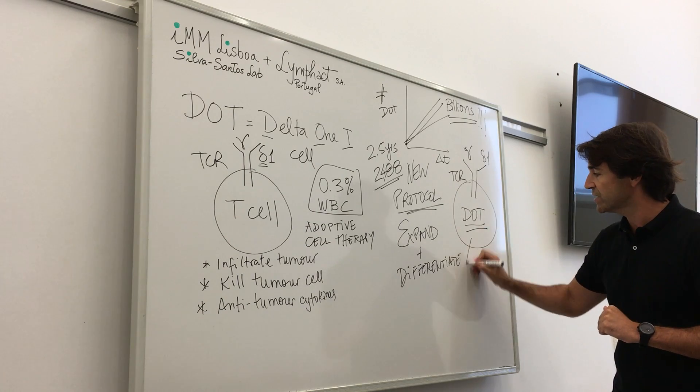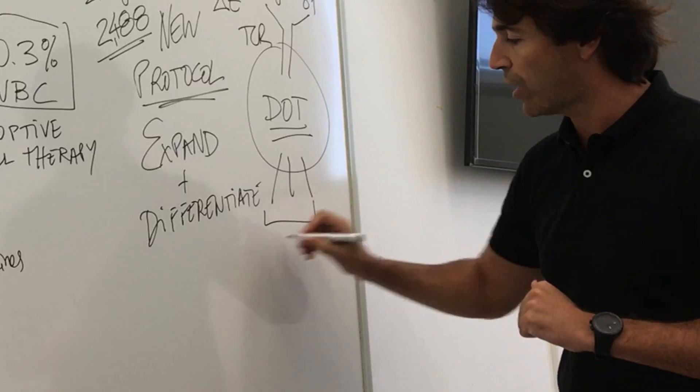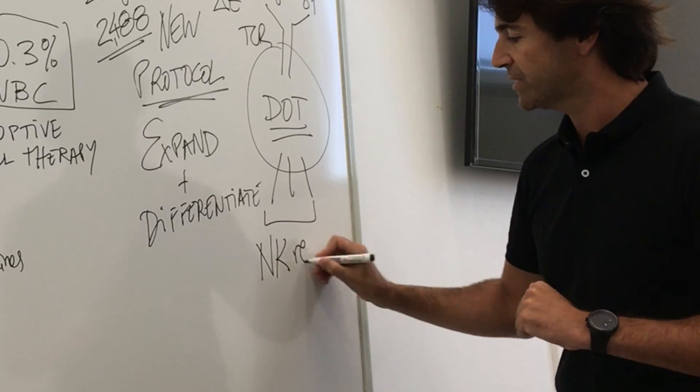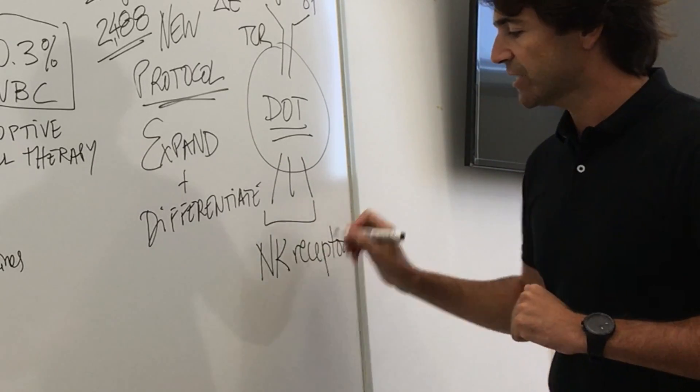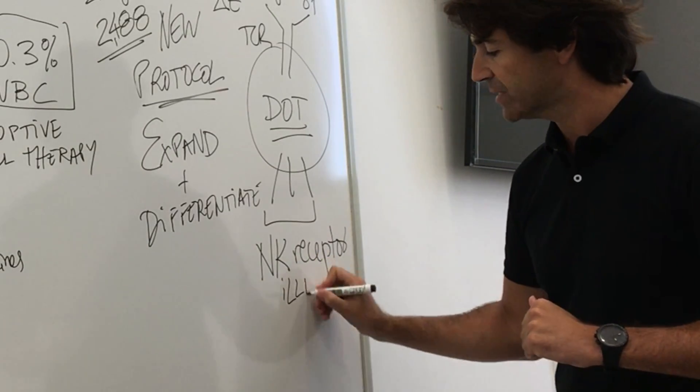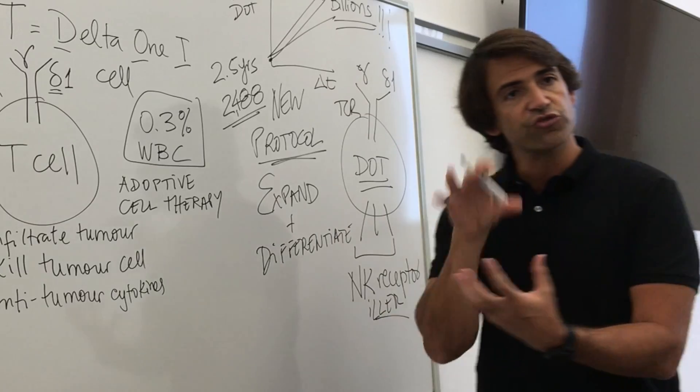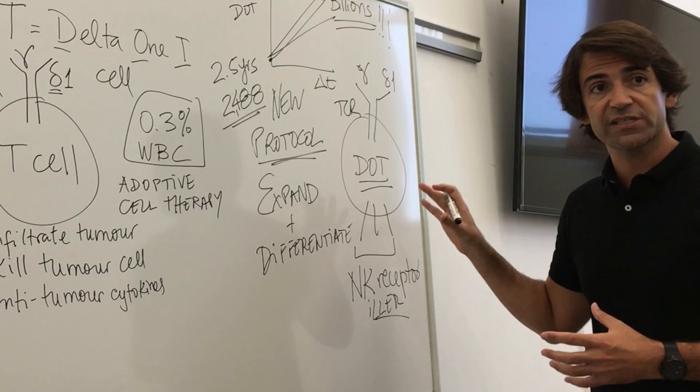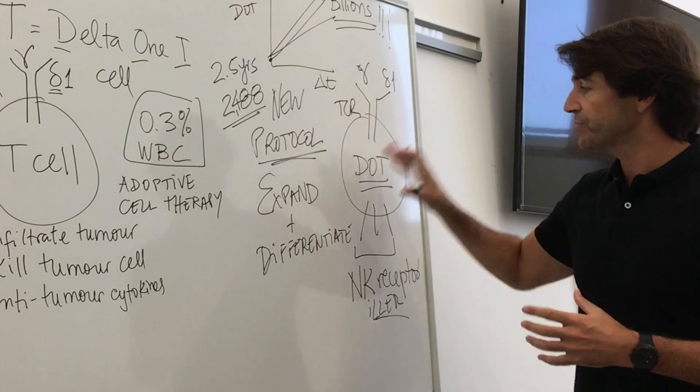But also, on top of this, they express a repertoire of NK receptors. And NK stands for natural killer. So these are killer receptors, molecules involved in triggering killer functions, cytotoxic functions, from these cells.